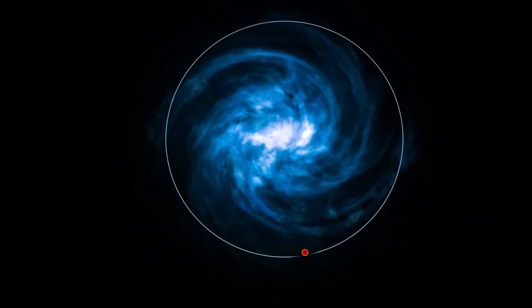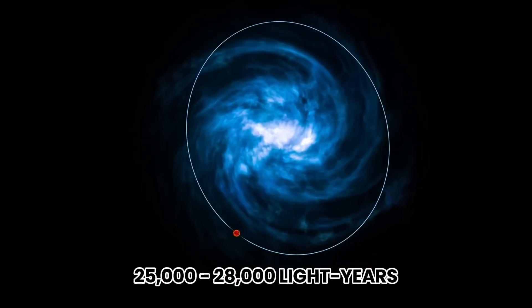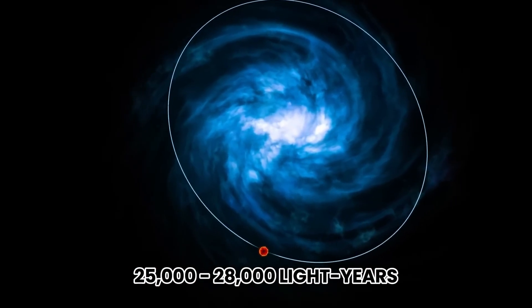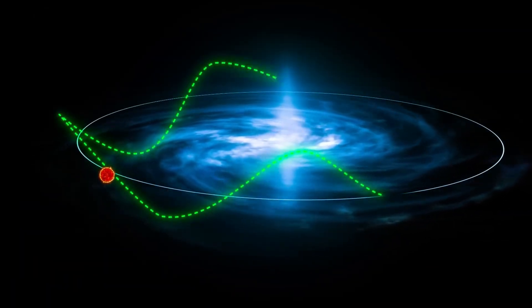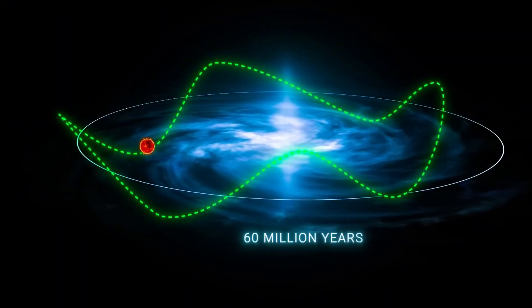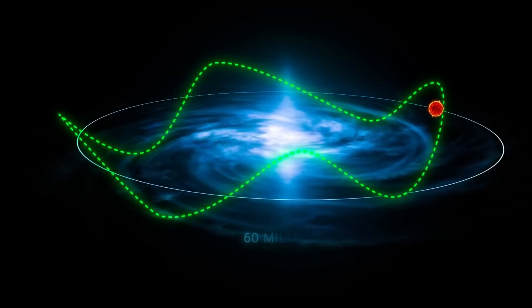The Sun's path is also elliptical. It ranges from about 25,000 to 28,000 light-years from the center. Every approximately 60 million years, it completes a vertical oscillation, rising and falling like a cosmic roller coaster.